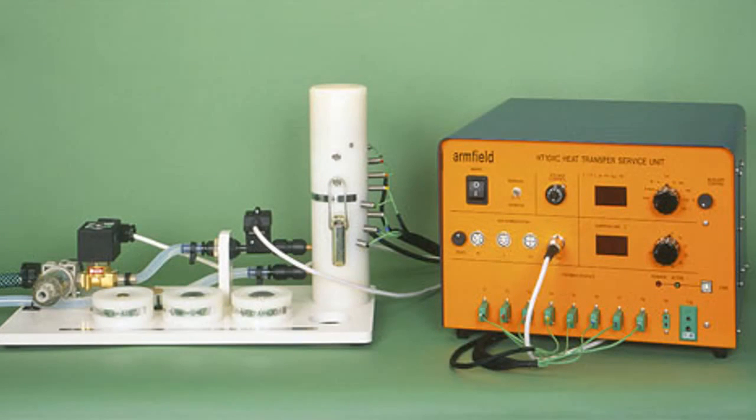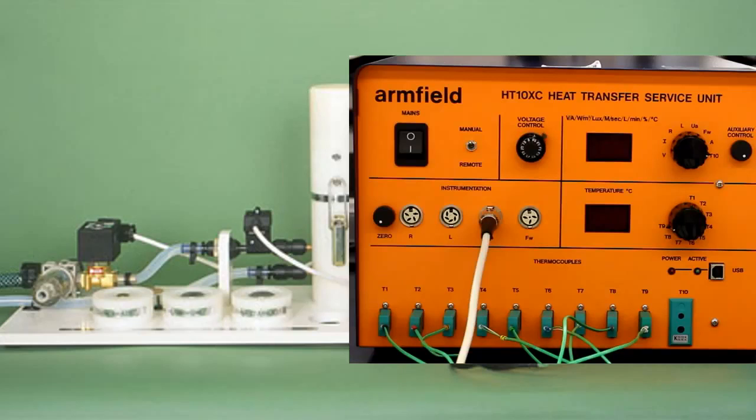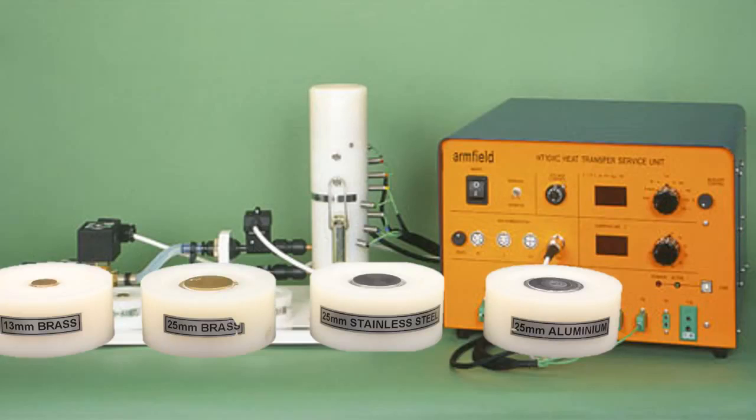The heat conduction lab consists of a linear heat conduction accessory, a heat transfer service unit on a suitable bench, and four different samples of brass, stainless steel, and aluminum.